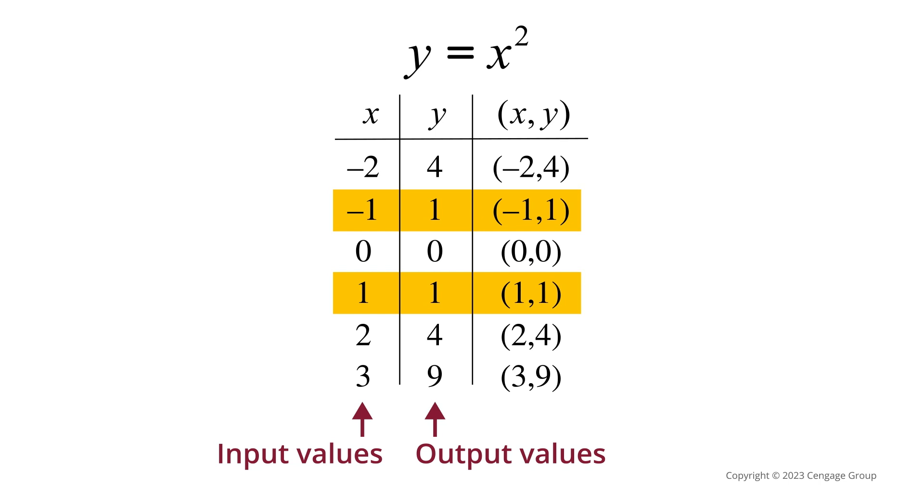Note that the x values negative 1 and 1 both have the same output value of 1, but that's okay. Different x values can have the same y value and the relation will still be a function. Also note that the x value of 1 has an output that is also 1. That's okay too.